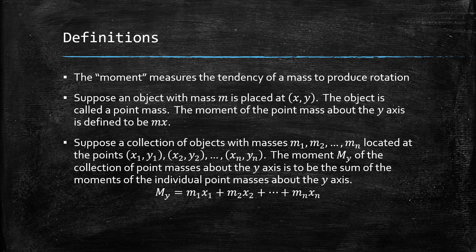To help with this we need some definitions. The moment measures the tendency of a mass to produce rotation — this is a quantitative value. If the moment is equal to zero, then there is zero rotation, so it would be at equilibrium. Now suppose an object with mass m is placed at the point (x, y); the object is called a point mass.